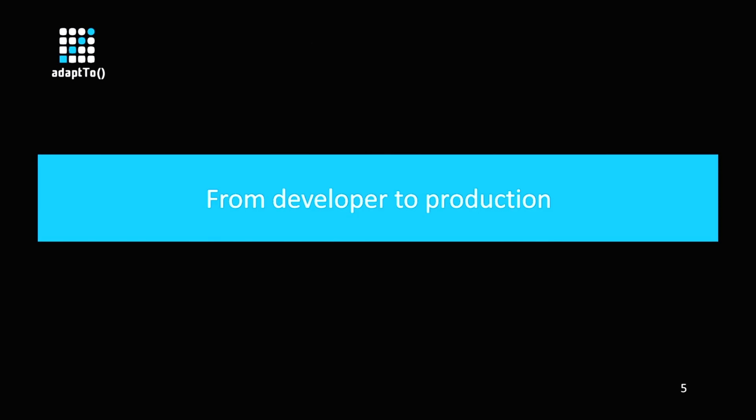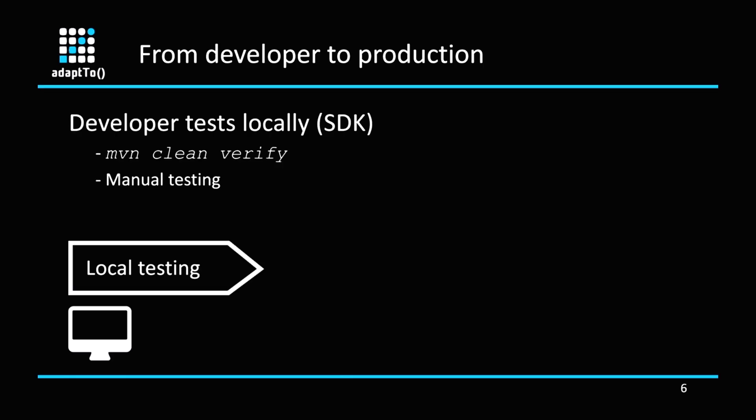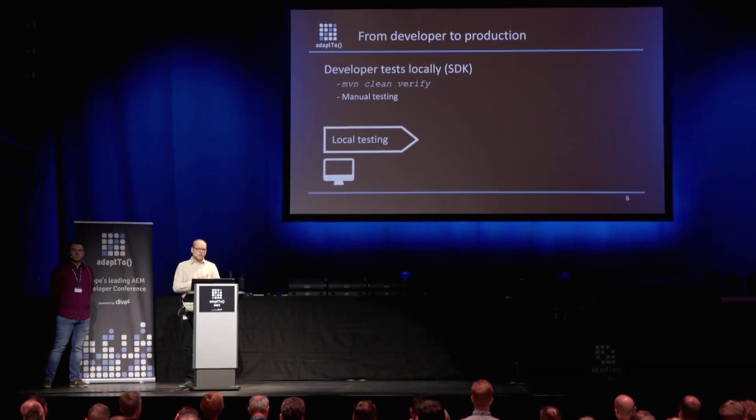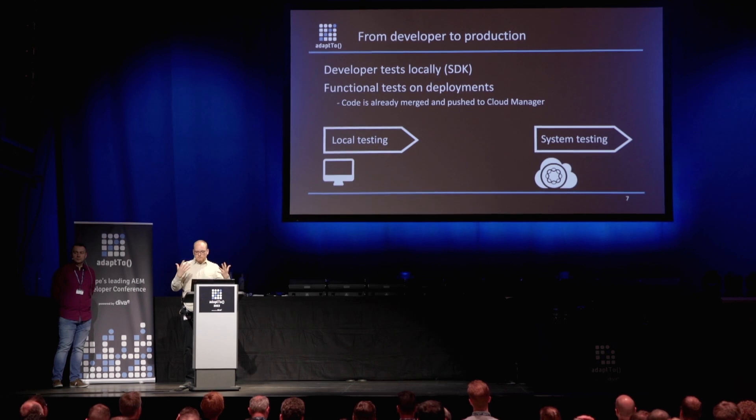Looking at the AEM Cloud Service offering, we have the developer using the SDK locally, maybe doing some manual testing, and then code changes are pushed into Cloud Manager where a pipeline runs the functional tests. But at this point the code is already merged into Cloud Manager. The missing part is a way to quickly iterate over pull requests and fail fast, so that the developer can make a git push and basically get quick feedback.